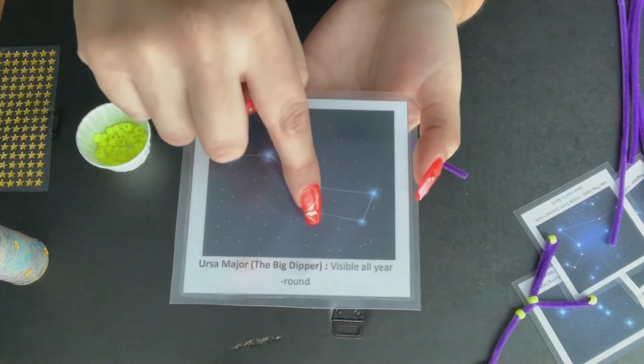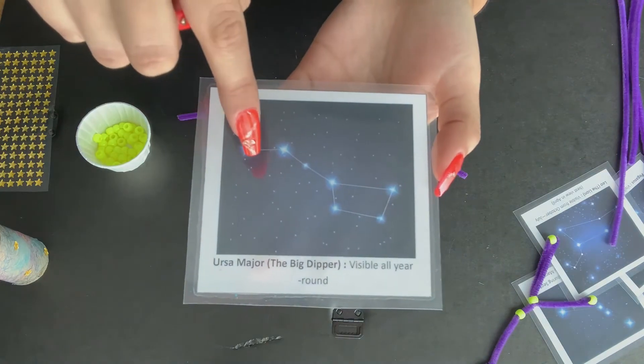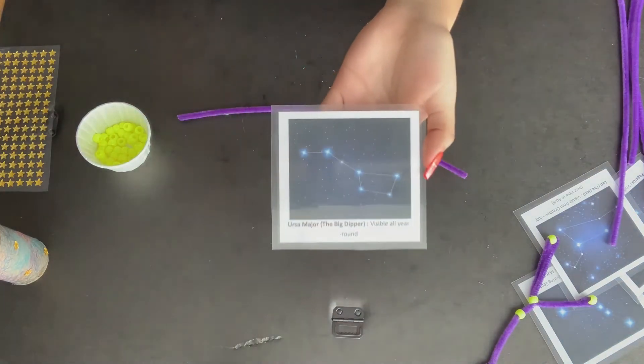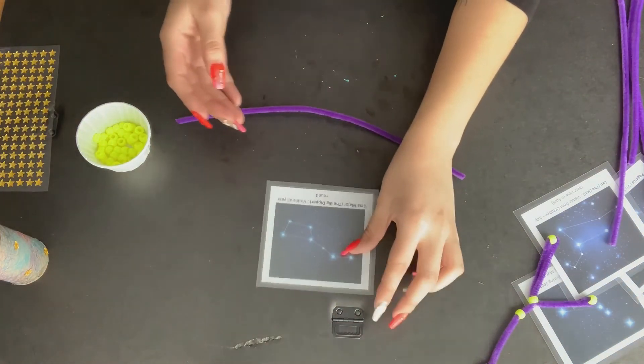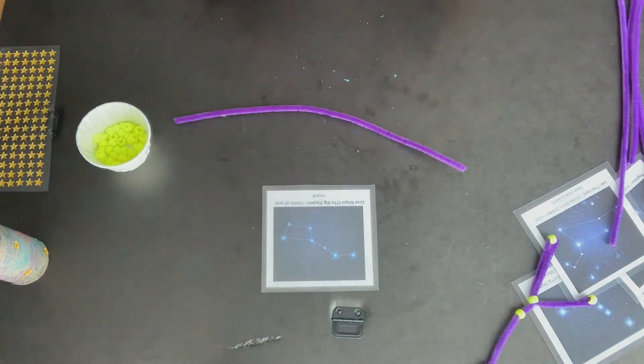One, two, three, four, five, six, seven. We have seven stars making up this constellation.